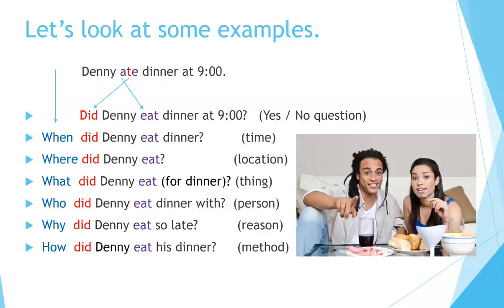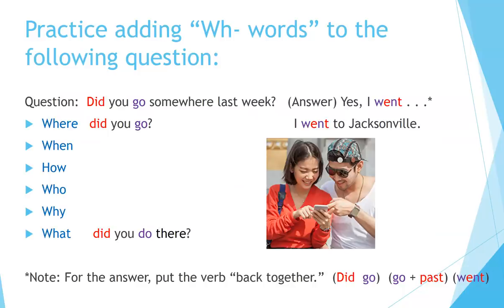Let's look at some examples. 'Denny ate dinner at 9 o'clock.' First, let's make it into a yes/no question: 'Did Denny eat dinner at 9 o'clock?' Now add the WH word to the beginning of the sentence, before 'did.' 'When did Denny eat dinner?' — asking about time. 'Where did Denny eat?' 'What did Denny eat for dinner?' 'Who did Denny eat dinner with?' 'Why did Denny eat so late?' 'How did Denny eat his dinner?' Put WH words at the beginning of the question, before 'do,' 'did,' or 'does.'